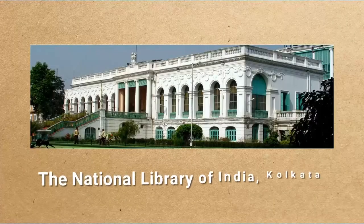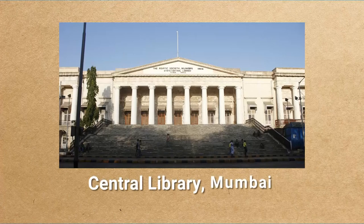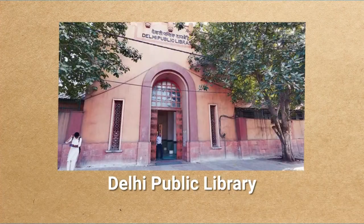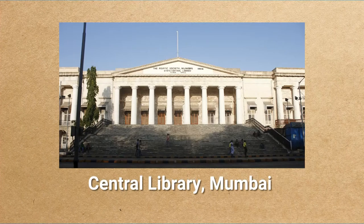The four copyright libraries are: the National Library, Kolkata; Konemera Public Library, Chennai; Central Library, Mumbai; and Delhi Public Library. You see all zones are covered — National Library has its own importance; Konemera Public Library means one copy available down south; one copy in Central Library, Mumbai; and one in Delhi Public Library. So the resources are widely distributed across the country. The Konemera Public Library is located in Tamil Nadu, Agmore, and holds a copy of all that is published.